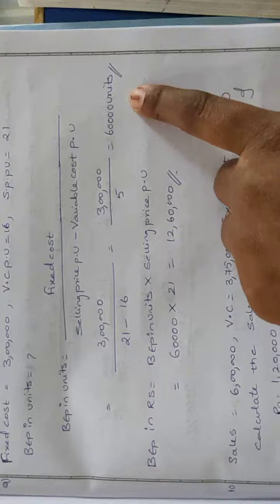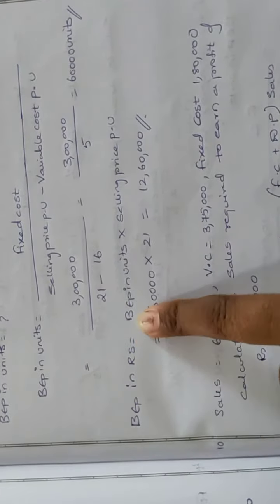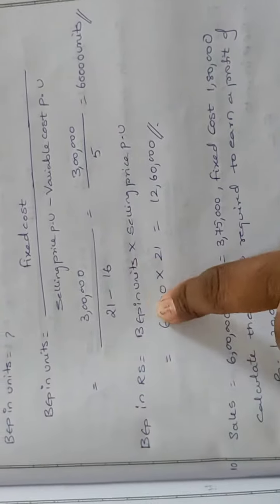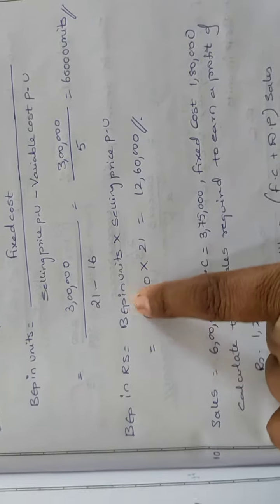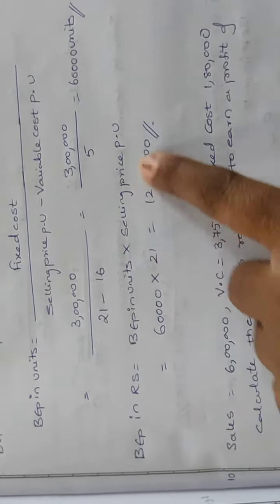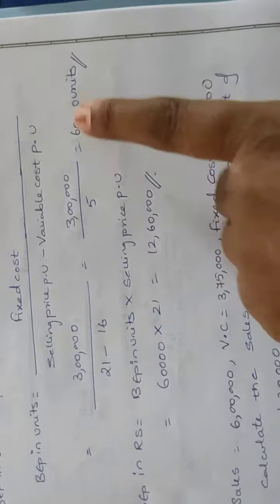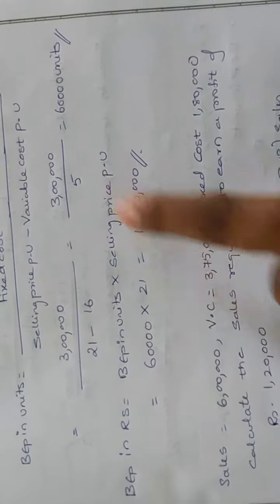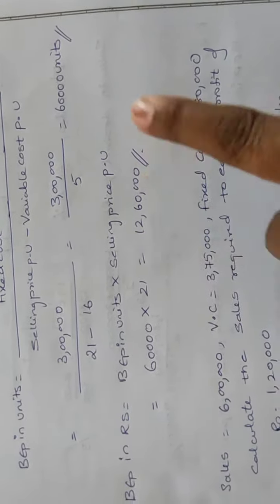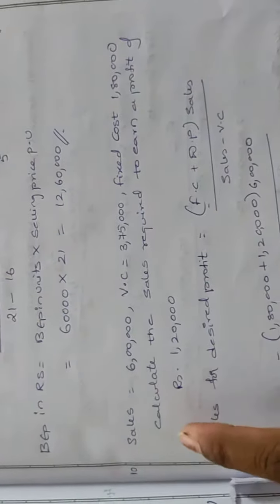These units will be converted into value, i.e., rupees. BEP in rupees = BEP in units × Selling Price per unit. BEP in units is 60,000, and selling price per unit is 21. So BEP in rupees = 60,000 × 21 = ₹12,60,000.